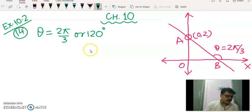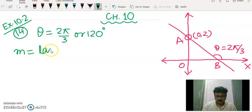Also find the equation of a line parallel to it and crossing the y-axis at a distance of 2 units below the origin. So first of all again we have to find the slope which is tan theta and it is tan 2 pi by 3 or tan 120 degree.